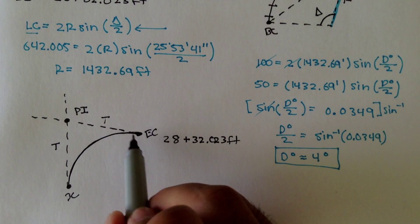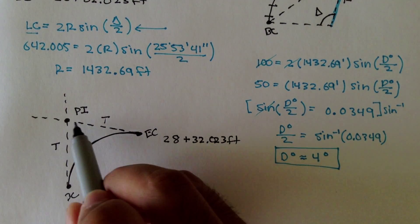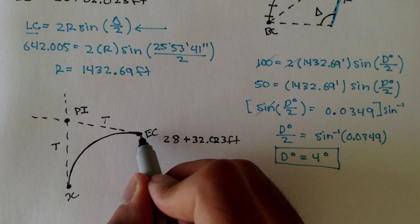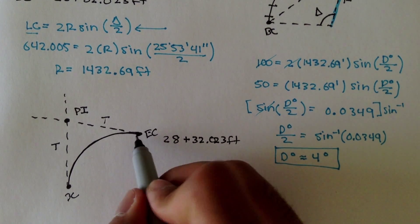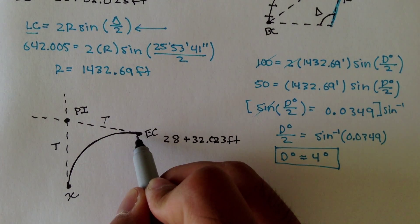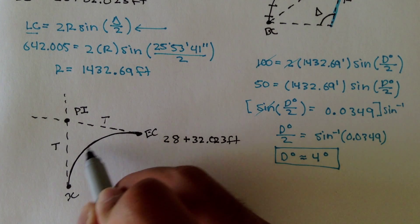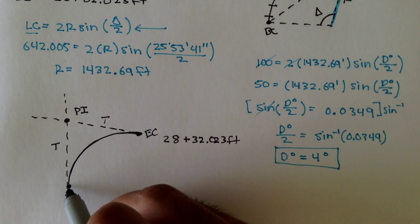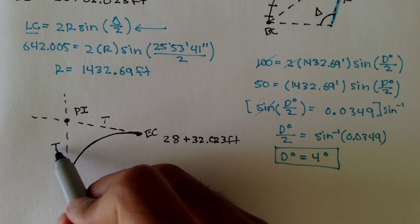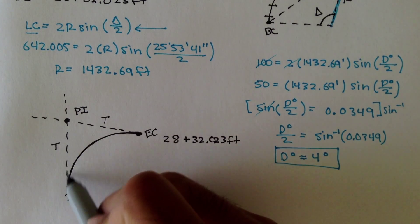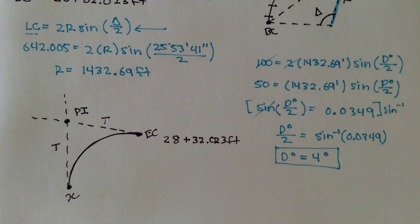We can't just subtract T from EC to get PI. We need to start at EC, figure out what the length is, subtract the length from EC to come over here to BC, then to BC we have to add the distance T to get to PI. So let's do that.